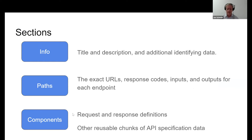There are three main sections to the OpenAPI specification. The first is the info section, which is mostly designed for people — it has a title and description, specifies the version of the specification it's following, and other identifying information. The second is the paths section, which shows the actual URLs, response codes, inputs, and outputs for each endpoint. And in the components section, it has the request and response definitions and other reusable chunks of information. We need to get from our model down to the information that can be put into the specification.